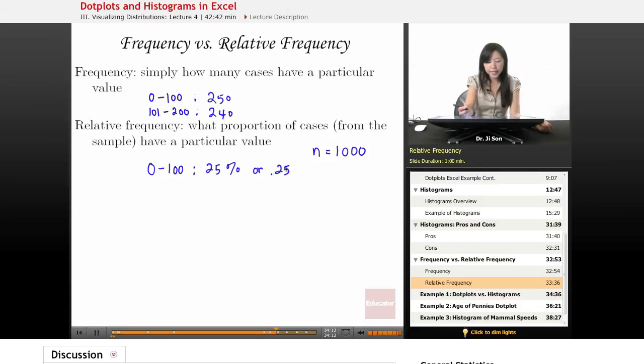And then between 101 and 200, instead of being 240 people, it would be 24% or 0.24.